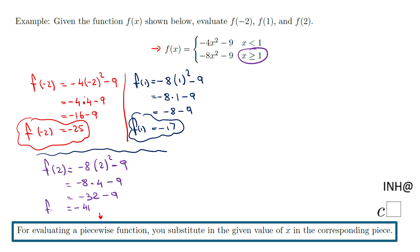The value of function f at 2, f of 2, is negative 41. And that's it.